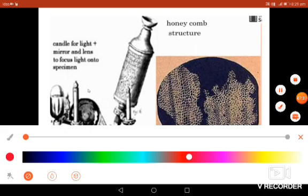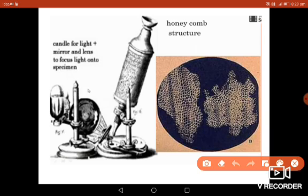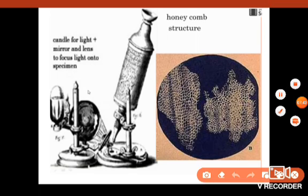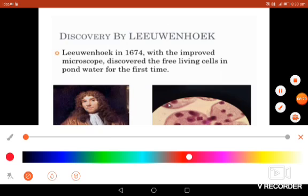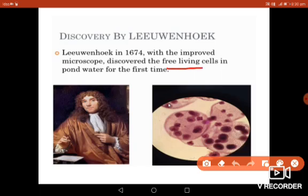Robert Hooke in 1665 observed dead cells for the first time. By further improvement of lenses, the scientist Leeuwenhoek in the year 1674 used an improved microscope and observed free-living cells for the first time.